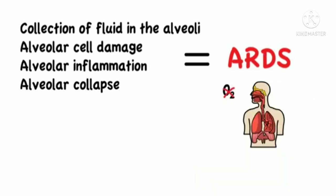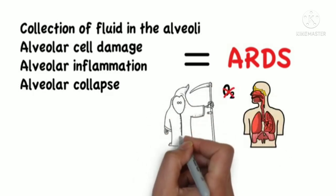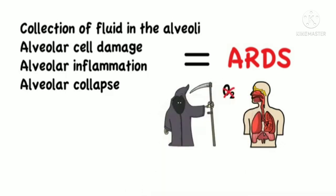The lungs cannot provide the body with enough oxygen. This is a life-threatening condition and is the main cause of death in COVID-19 patients.